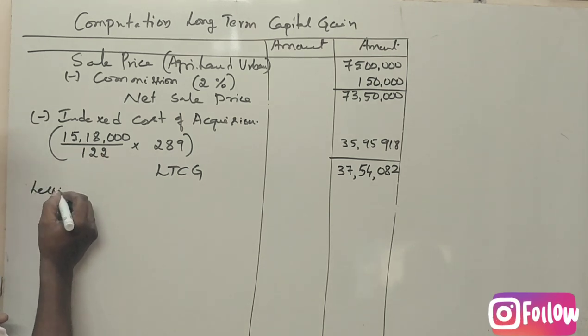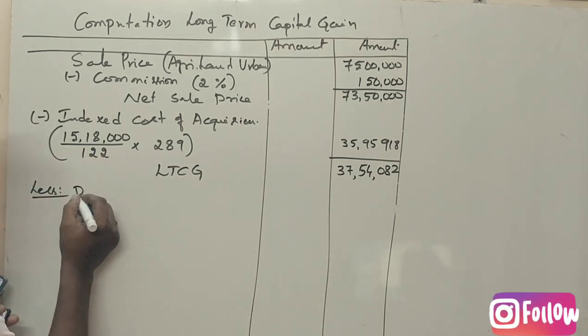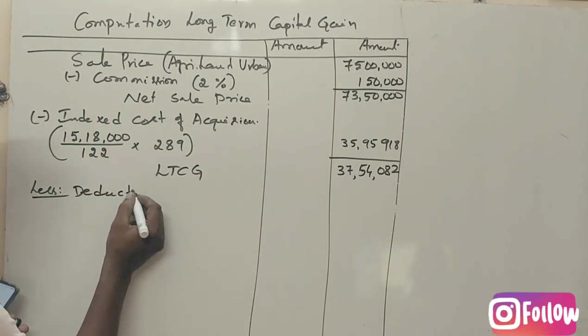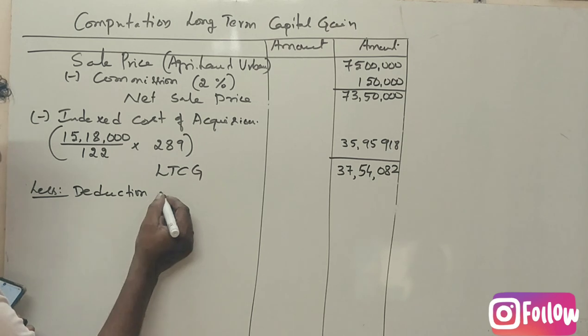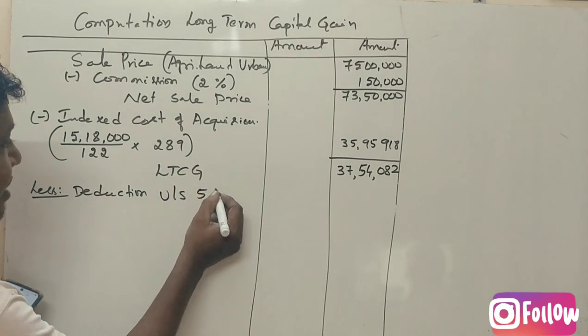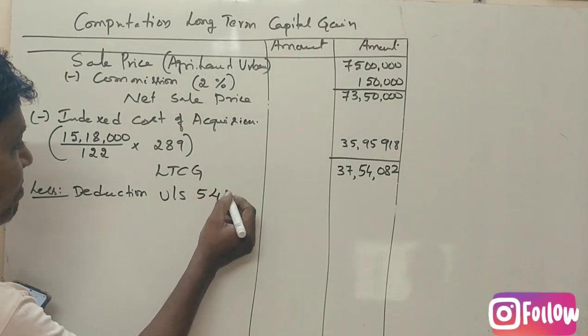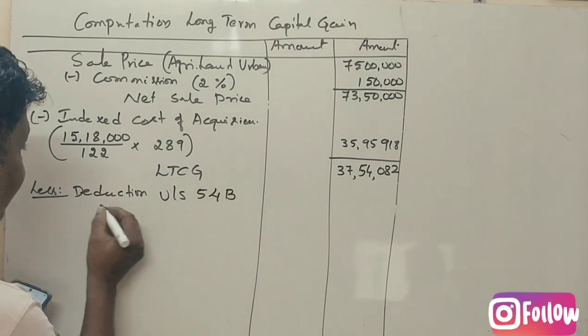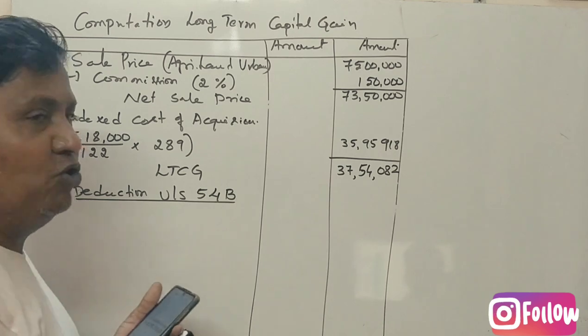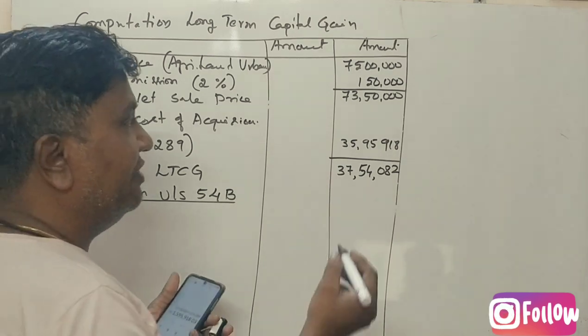Now, one deduction — deduction under Section 54B. Yes, there is a deduction under Section 54B. You have to write: Urban Agricultural Land — Sale.